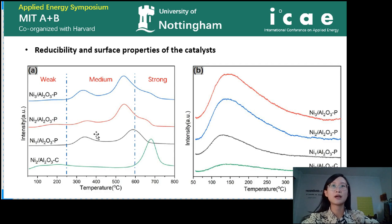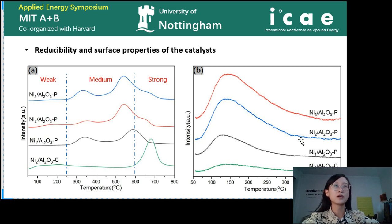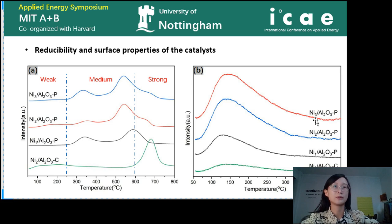Here is the H₂-TPR and CO₂-TPD for all four catalysts. All catalysts made by plasma decomposition have more medium-interaction nickel, suggesting most nickel does not form a spinel but is dispersed on the surface. The CO₂-TPD compares the carbon dioxide adsorption ability of these catalysts. Catalysts made by plasma decomposition have better CO₂ adsorption than the control group. Furthermore, the amount of CO₂ adsorbed by the nickel-2 and nickel-3 catalysts is similar, suggesting that adding more nickel cannot provide more active sites for CO₂ activation — which explains the similar catalytic performance of nickel-2 and nickel-3 alumina in the methanation test.